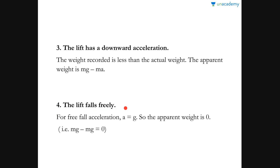The fourth case — very important: the lift falls freely. Free fall means the acceleration equals the acceleration due to gravity g, that is 9.8 m/s². Using the third case formula, the apparent weight is mg − ma. Since a = g, the apparent weight becomes mg − mg = zero. So if a lift falls freely, the person inside appears to have no weight. Remember this conclusion. Remember all four cases thoroughly, as sums will be asked on these concepts.